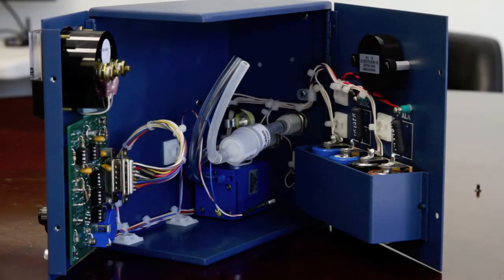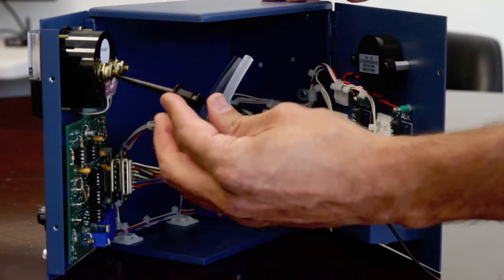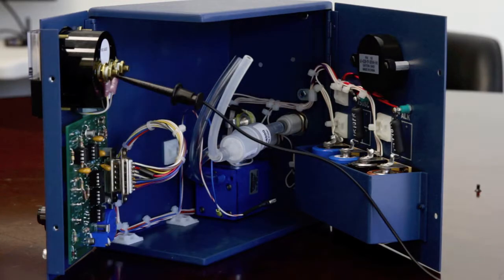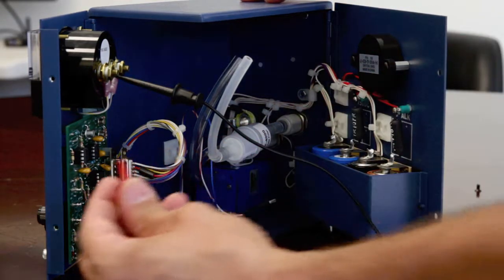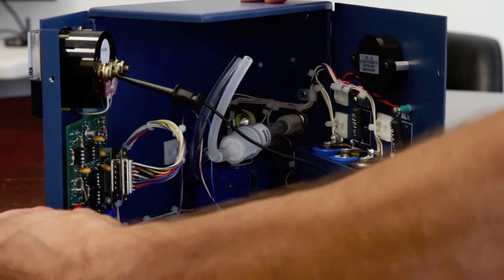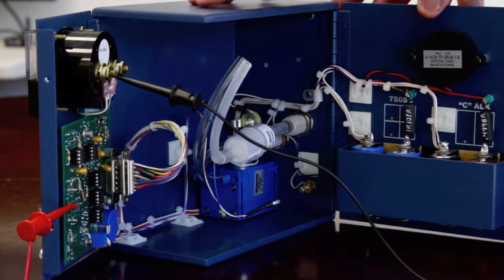Connect the negative lead of the digital voltmeter to the negative terminal of the analog meter on the analyzer. Connect the positive lead of the digital voltmeter to SE on the circuit board.